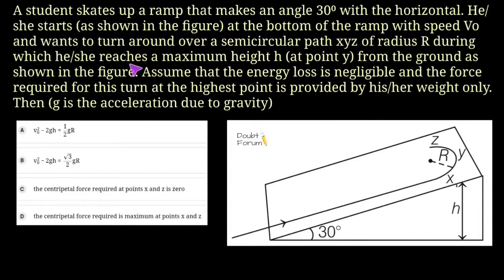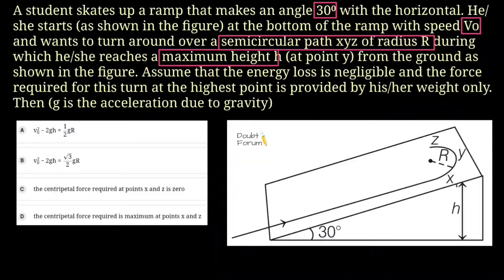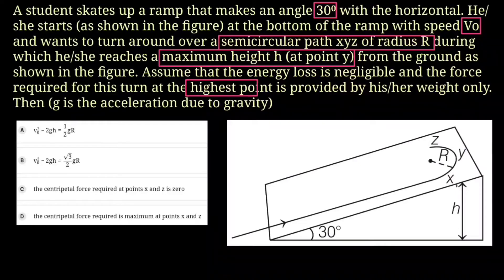Hello friends, I welcome you all to Doubt Forum. This question is: a student skates up a ramp that makes an angle of 30 degrees with the horizontal. He or she starts at the bottom of the ramp with a speed V0 and wants to turn around over a semi-circular path XYZ of radius R, during which he or she reaches a maximum height H at point Y from the ground. We can assume that energy loss is negligible and the force required for this turn at the highest point is provided by his or her weight only. There are four options given and we have to find the correct ones.